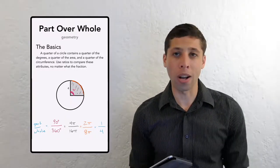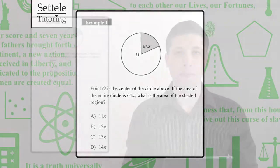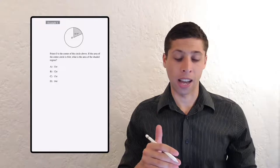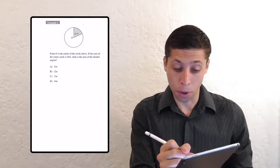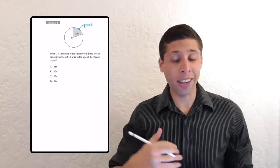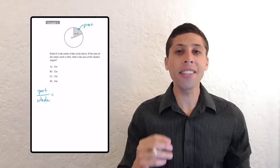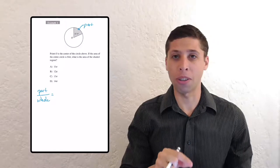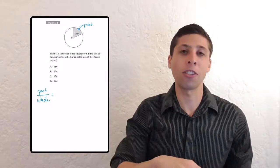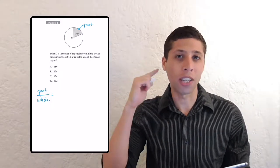Let's look at Example 1. Point O is the center of the circle. If the area of the entire circle is 64π, what is the area of the shaded region? If you saw this question on a test, I would want you to instantly recognize it's a part over whole question — the picture shows a whole circle with part of it shaded. So the first thing I would do is write 'part over whole' on my page. This is an important step. The SAT is counting on you to get lost in your head doing work logically instead of putting it on the page. If you write stuff down, it comes out of your brain and onto the page, freeing up space to do the next step or think about the problem a different way. Always show your work — put it on the page.